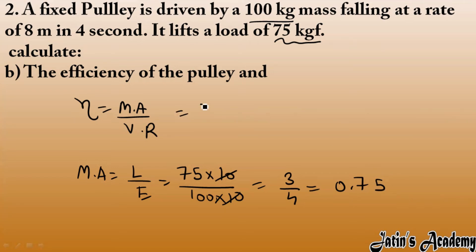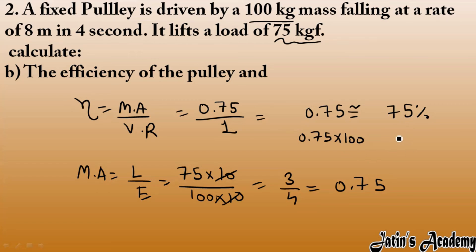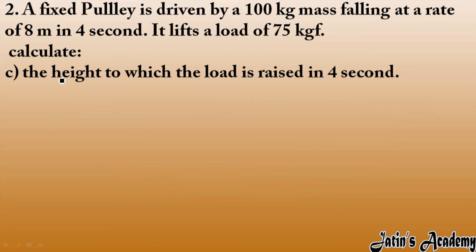Mechanical advantage is 0.75. For a single fixed pulley, the velocity ratio is always 1. So efficiency = 0.75 / 1 = 0.75, which is 75%. Efficiency of the pulley is 75%.